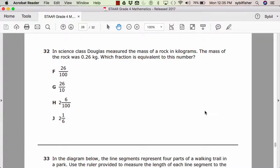Number 32. In science class, Douglas measured the mass of rock in kilograms. The mass of the rock was 0.26 kilograms. Which fraction is equivalent to this number? F, 26 over 100. 26 over 10. H, 2 over 6 and 100. J, 2 and 1 sixth.